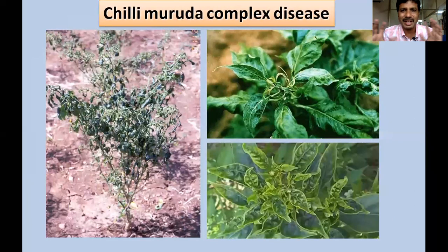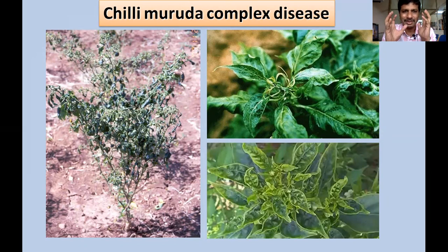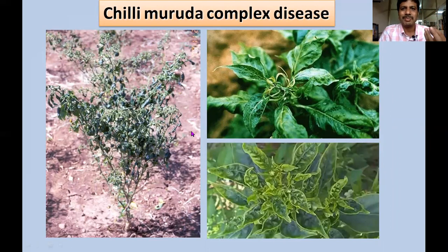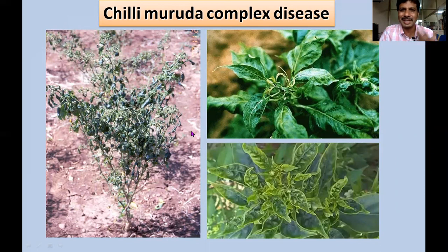These viral diseases manifest as stunted growth, upward and downward curling, and necrosis — collectively known as Chili Murda complex disease. This results in poor plant growth, poor flowering, and yield reduction. Despite efforts by research organizations to develop resistant or tolerant hybrids, management of Chili Murda complex disease remains difficult due to the involvement of multiple pathogens, insects, and mites.